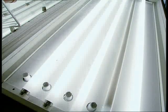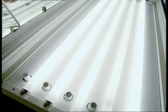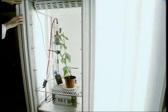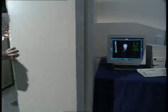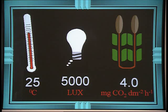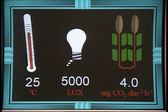Light intensity is controlled by switching on a different number of fluorescent tubes in the cabinet. Close the doors and the gas analyser does the rest. The temperature in the cabinet is kept at 25 degrees Celsius. With four fluorescent tubes switched on, the light intensity is 5,000 lux and the CO2 uptake is 4 milligrams per hour.